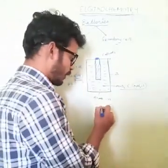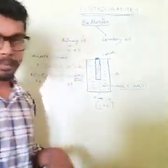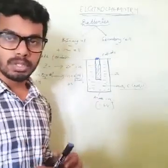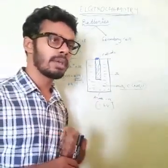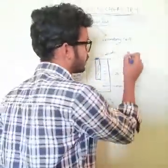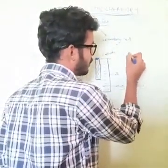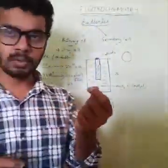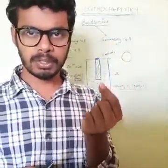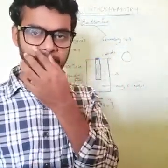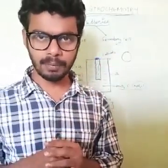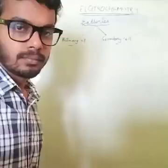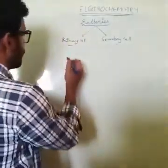Next is the mercury cell — the one we use in a watch battery. It is the small, tiny, round one. If you open your watch, you'll find a small battery — that battery is nothing but your mercury cell, and it is a primary cell.